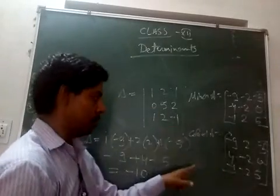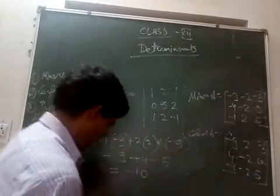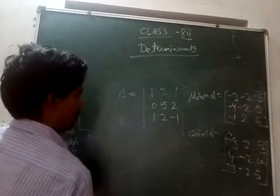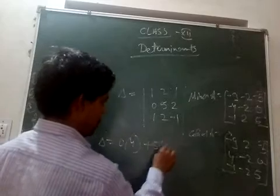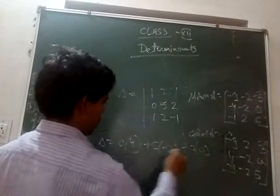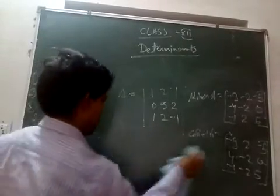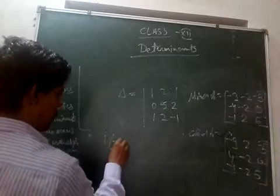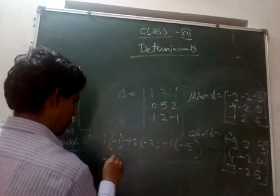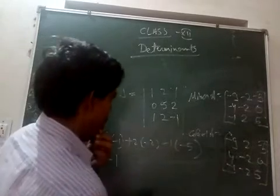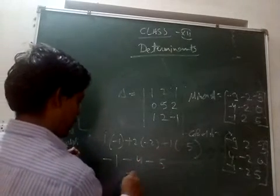We also have to check from the second row and third row. For the second row: 0 × 4 + 5 × (-2) + 2 × 0 = 0 - 10 + 0 = -10. For the third row: 1 × (-1) + 2 × (-2) + (-1) × 5 = -1 - 4 - 5 = -10.